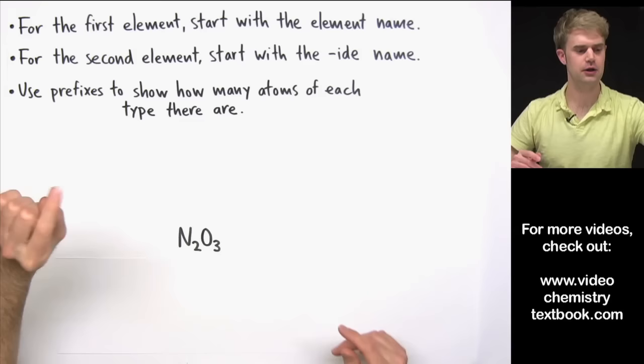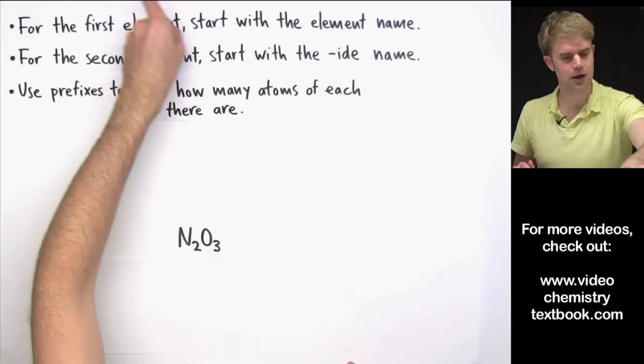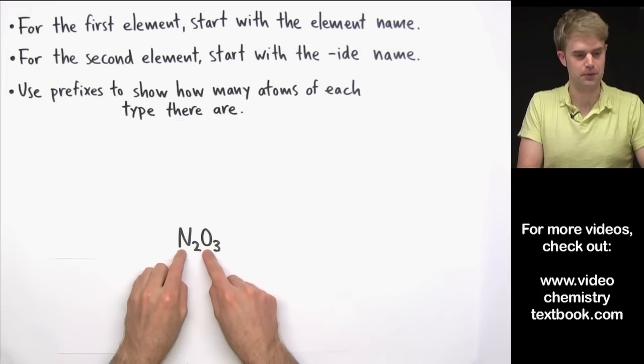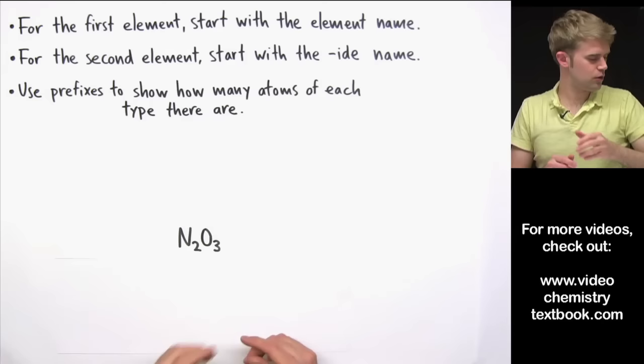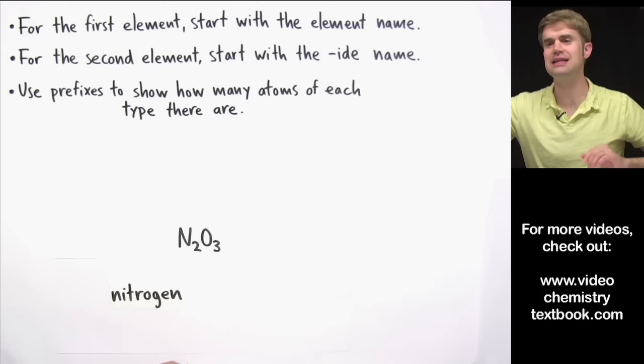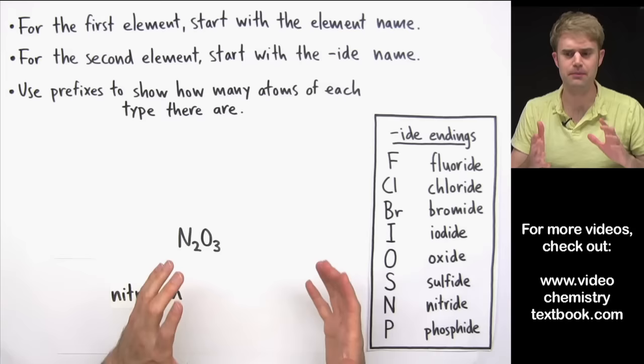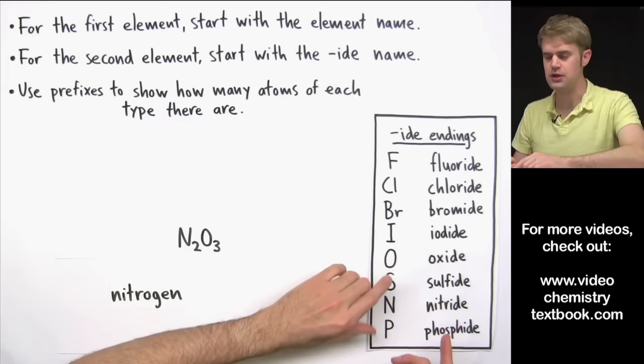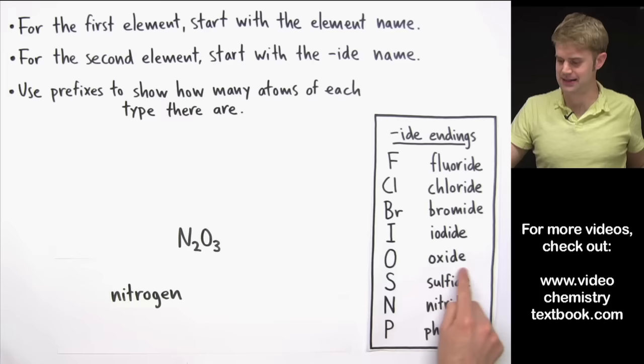We're going to name N₂O₃ following these steps. Step one: for the first element, start with the element name. The first element here is nitrogen, N, so we write nitrogen. Step two: for the second element — that's oxygen — start with the IDE name, which is the version of the element name that ends in -ide. These are the same names used for negative ions. Oxygen's IDE name is oxide. So we've got nitrogen and oxide.